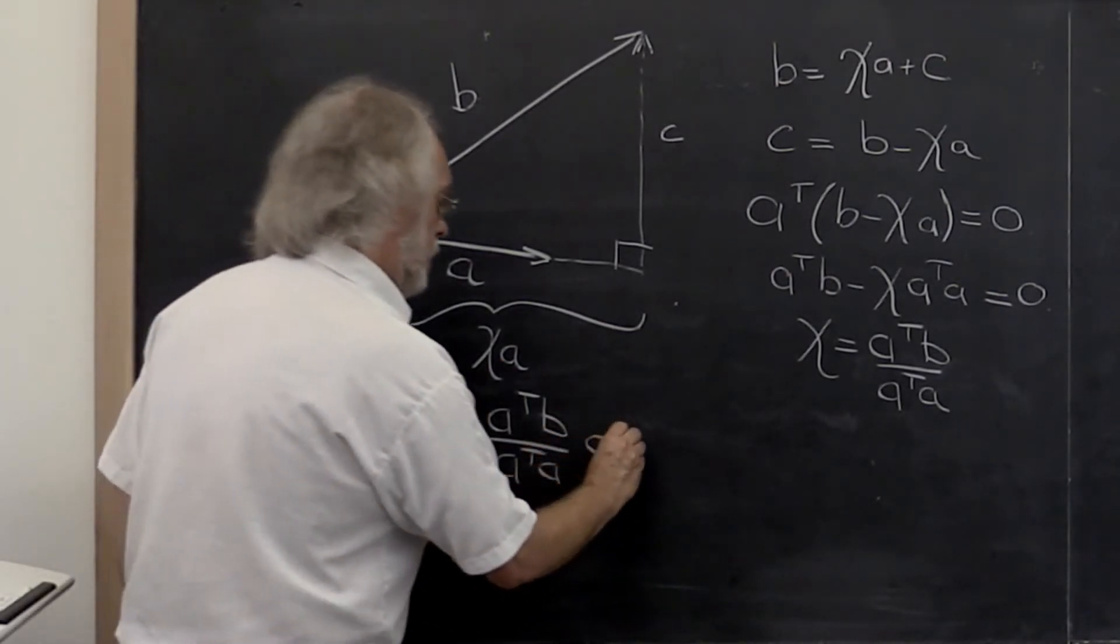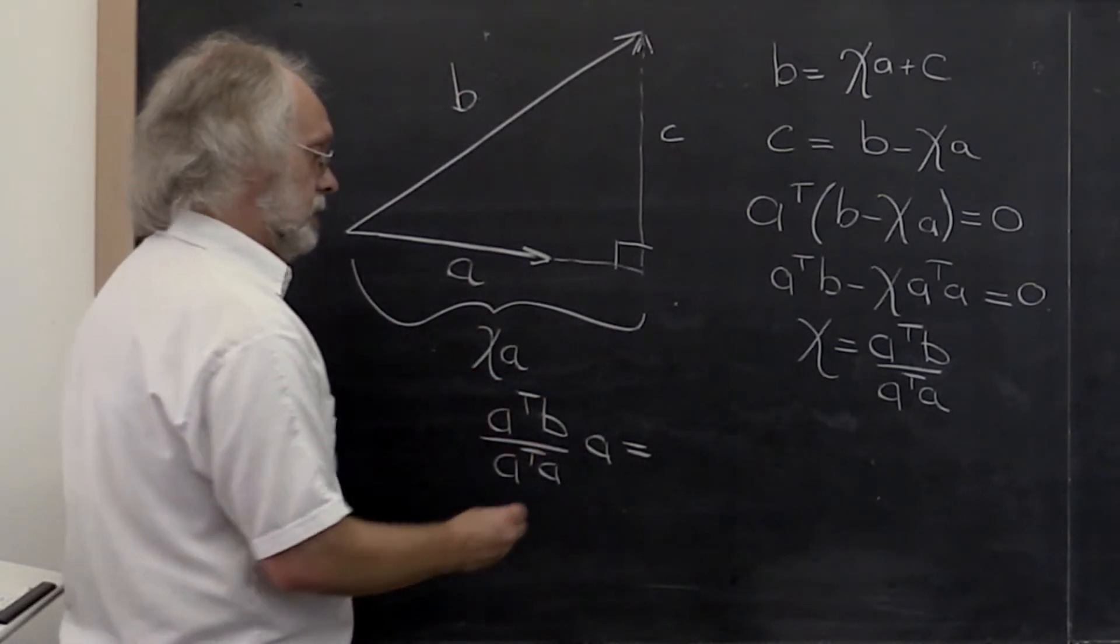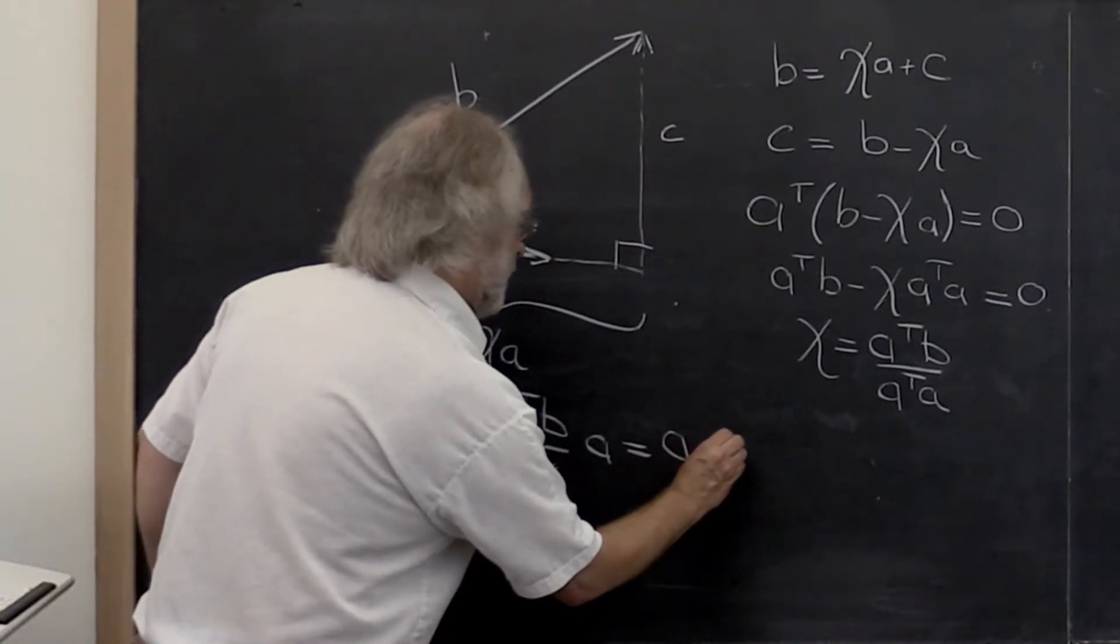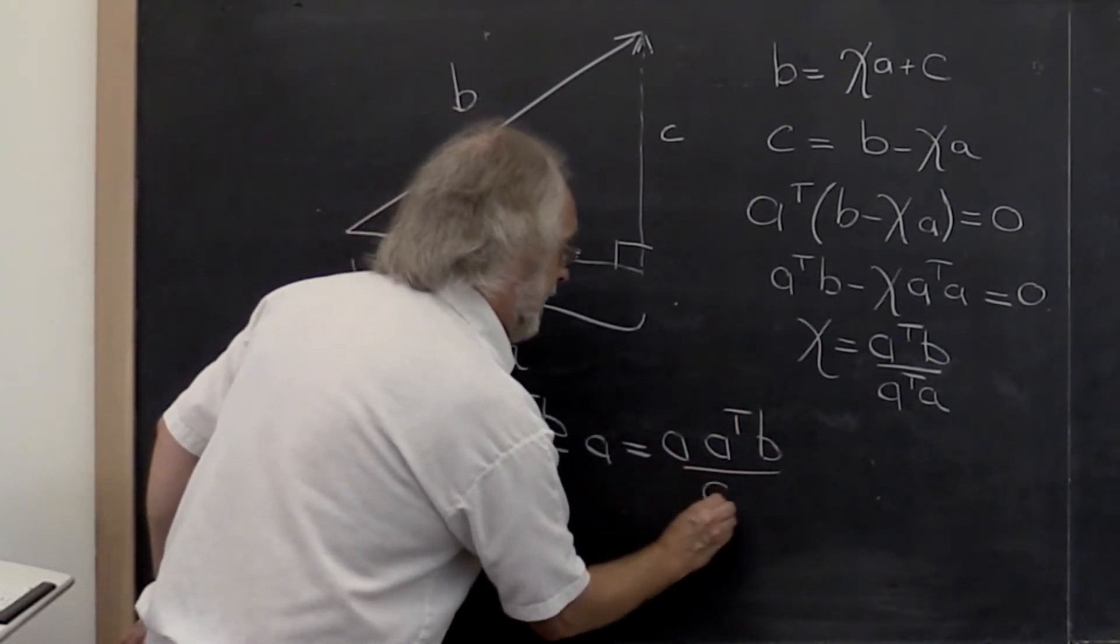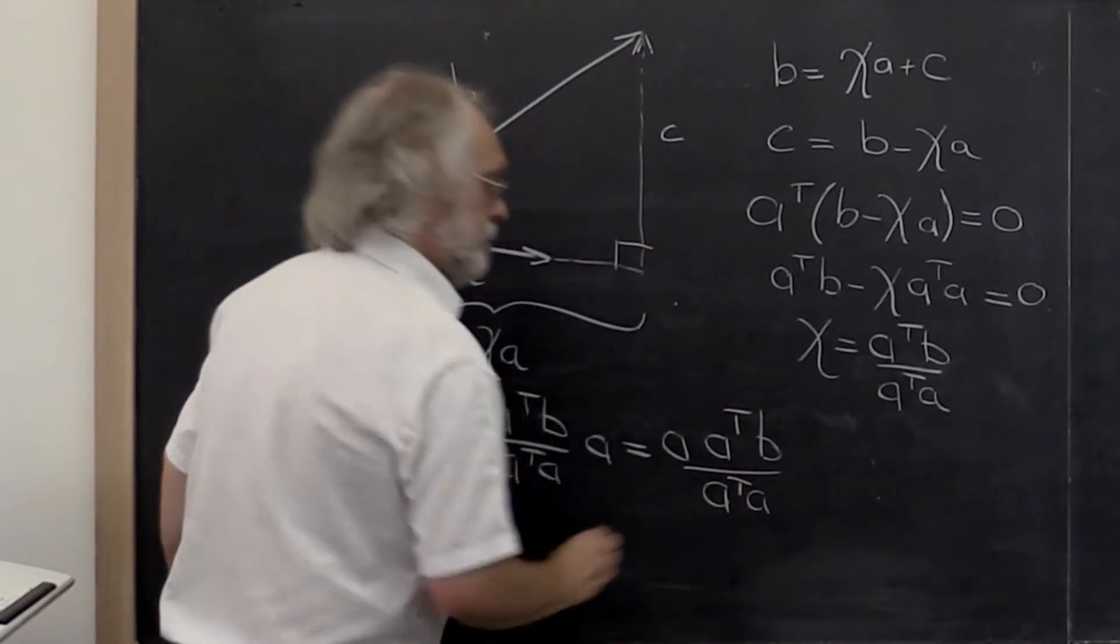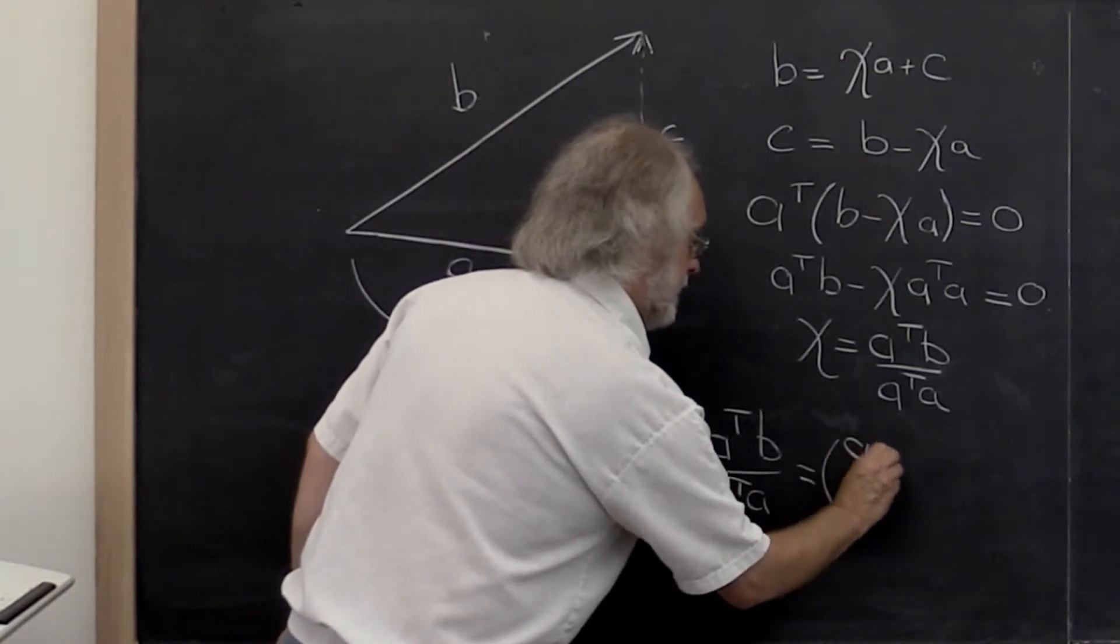Which we can then rearrange as—a scalar times a vector is the same as a vector times a scalar—so we get A times A transpose B divided by A transpose A. And then we can place some clever parentheses.